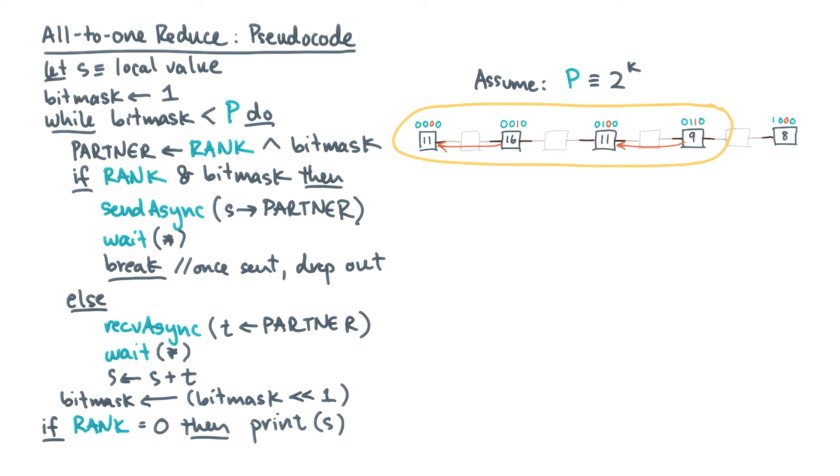Now in this scheme, the final result will end up on rank zero. So for rank zero, we can print the final result.